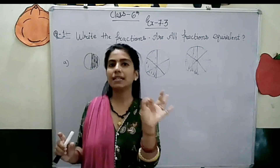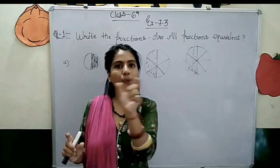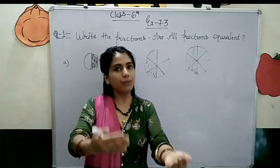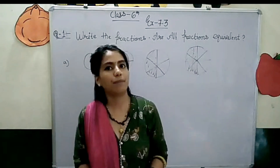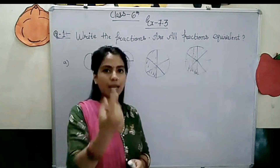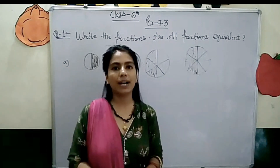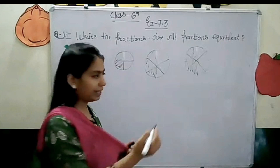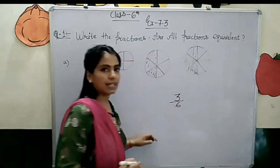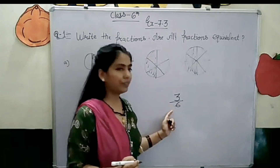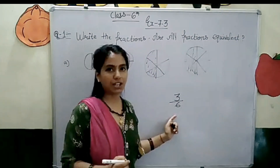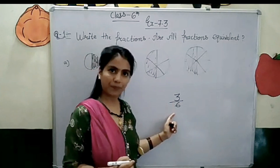So, what is equivalent fraction? As the name suggests, equivalent means equal — whatever the value is. Whatever the number, the value should be the same. For example, let's take 3 by 6. Suppose I have 3 by 6. What is the equivalent fraction for 3 by 6?